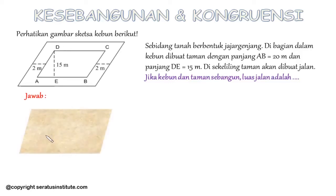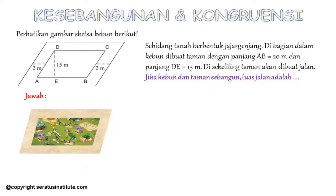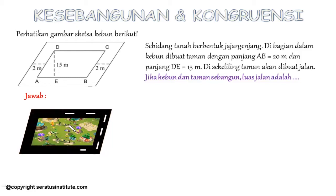Sebelumnya perhatikan dulu sketsa berikut ini. Jadi di sini ada tanah berbentuk kebun, kebunnya berbentuk jajar genjang. Kemudian di bagian dalamnya dibuat taman — tamannya di dalam kebun, bentuknya jajar genjang juga. Kemudian di sekeliling taman akan dibuat jalan. Kemudian diketahui di soal titik A,